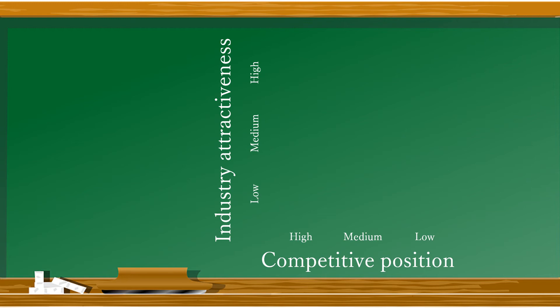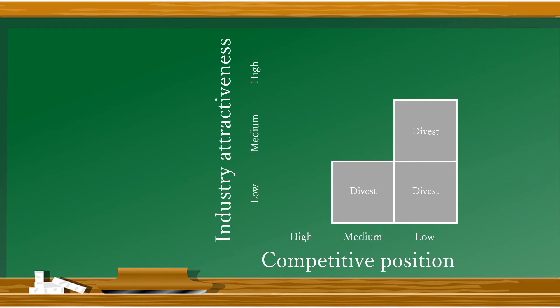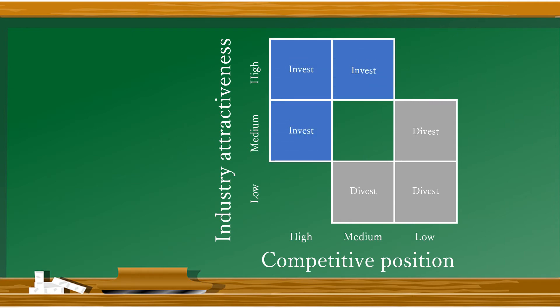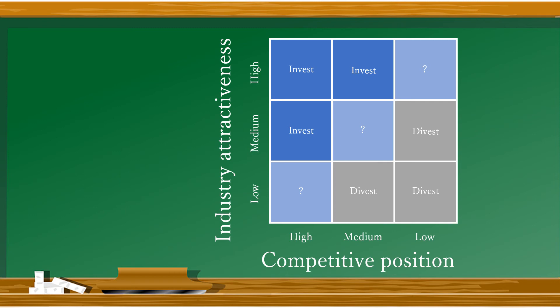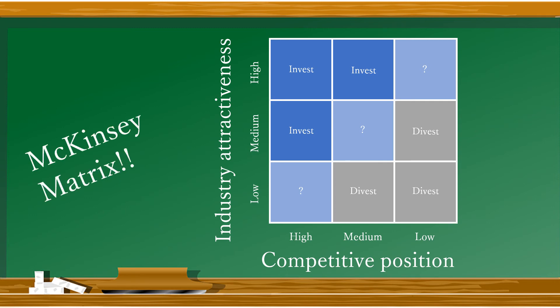But instead of getting nine separate options, let's break our choices into three even regions. Our first region is going to tell us to divest from these products, like the dogs in the BCG matrix — but we have a little more gradation in what is considered a dog. Our other clear choice is going to be to invest, like the stars. And for the last three boxes, we're going to have to examine them further, so let's put question marks for future analysis. And just like that, we created the McKinsey matrix.